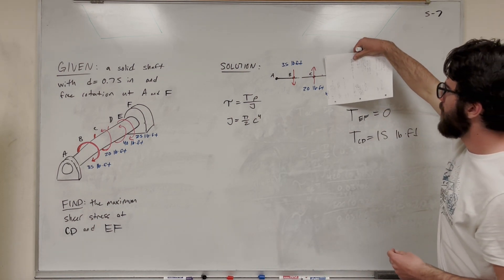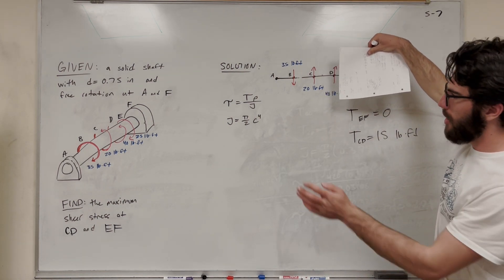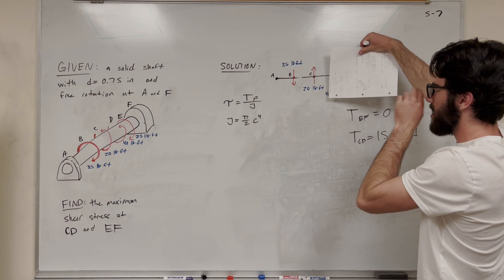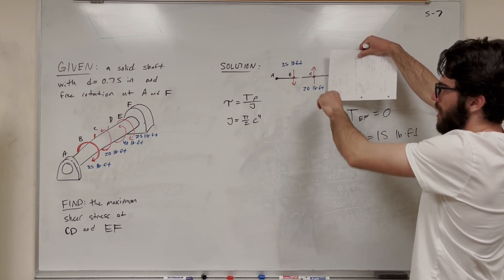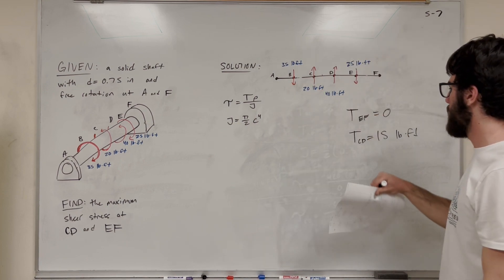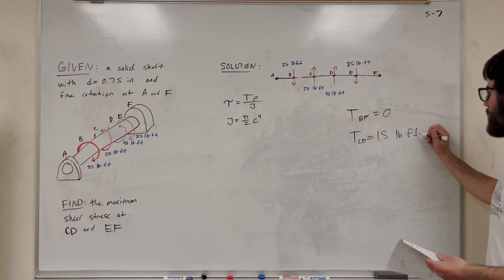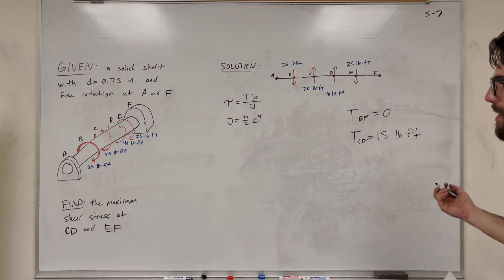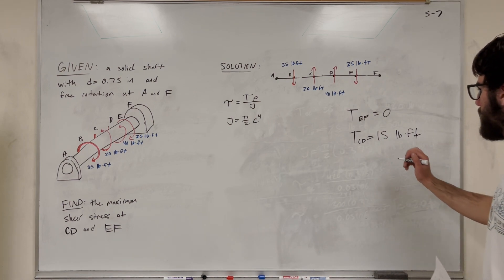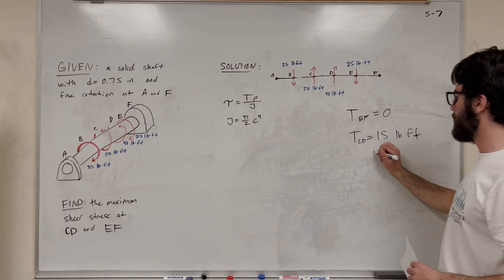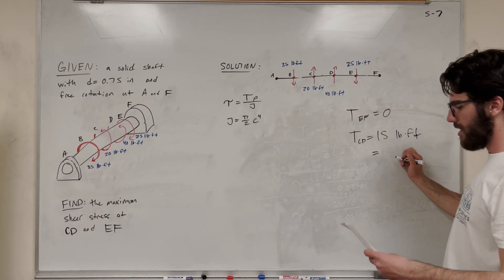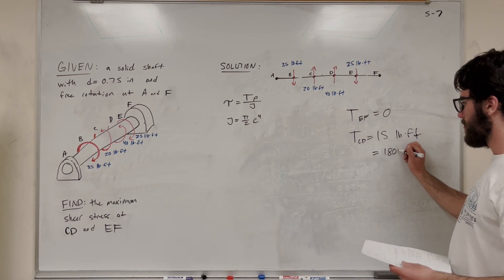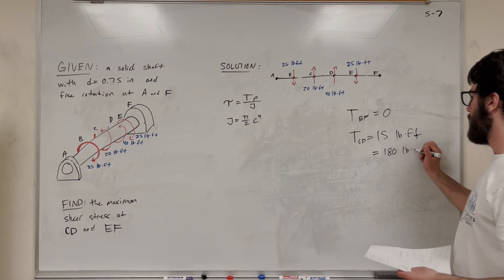You can do that the other way too, because we know that they're equal to each other. No matter which side you do it from, you'll get the same answer. You can see it's 35 minus 20 — that's 15. We have pound-feet, but we want pound-inches because we're going to find an answer in PSI. So if you convert this to pound-inches, it's going to be 15 times 12, which is 180 pound-inches.